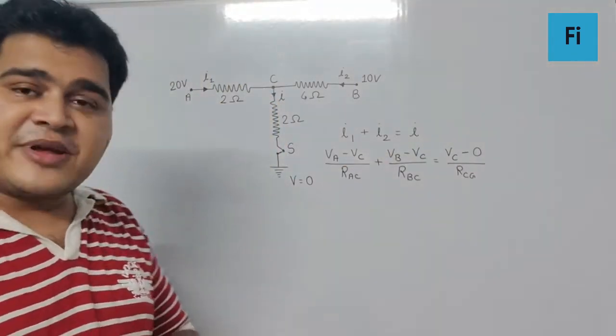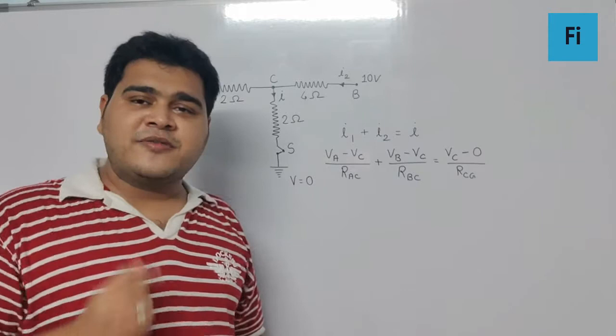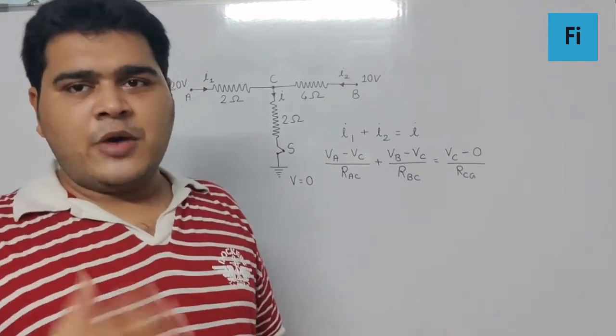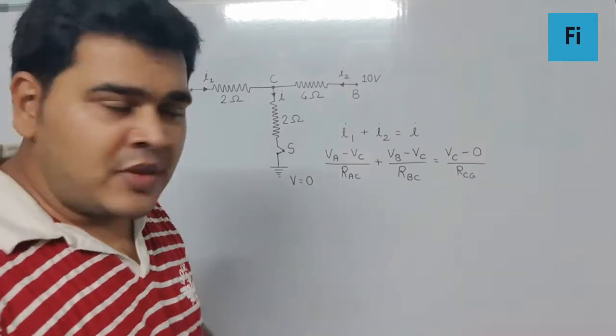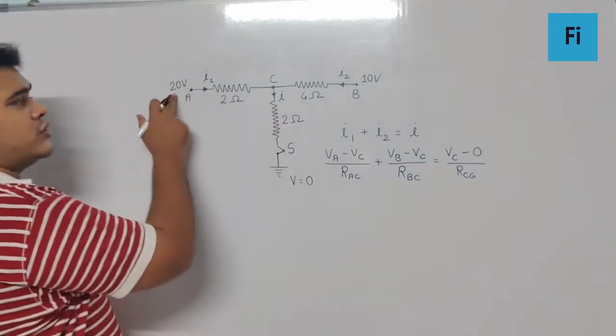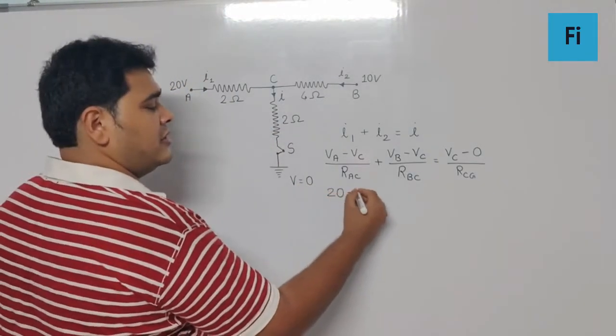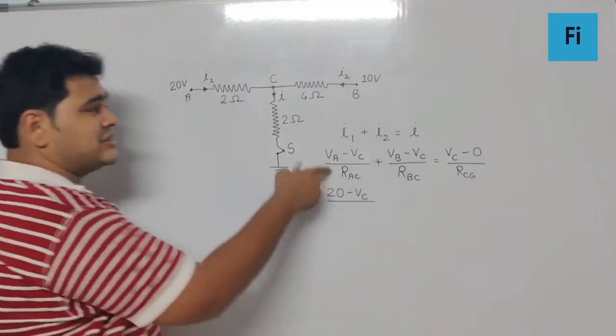So basically I have represented all the three currents in the form of potential difference upon the resistance. Now we can just substitute the values. VA as we know it's 20 volt, VC is unknown, the resistance between A and C is 2 ohm.